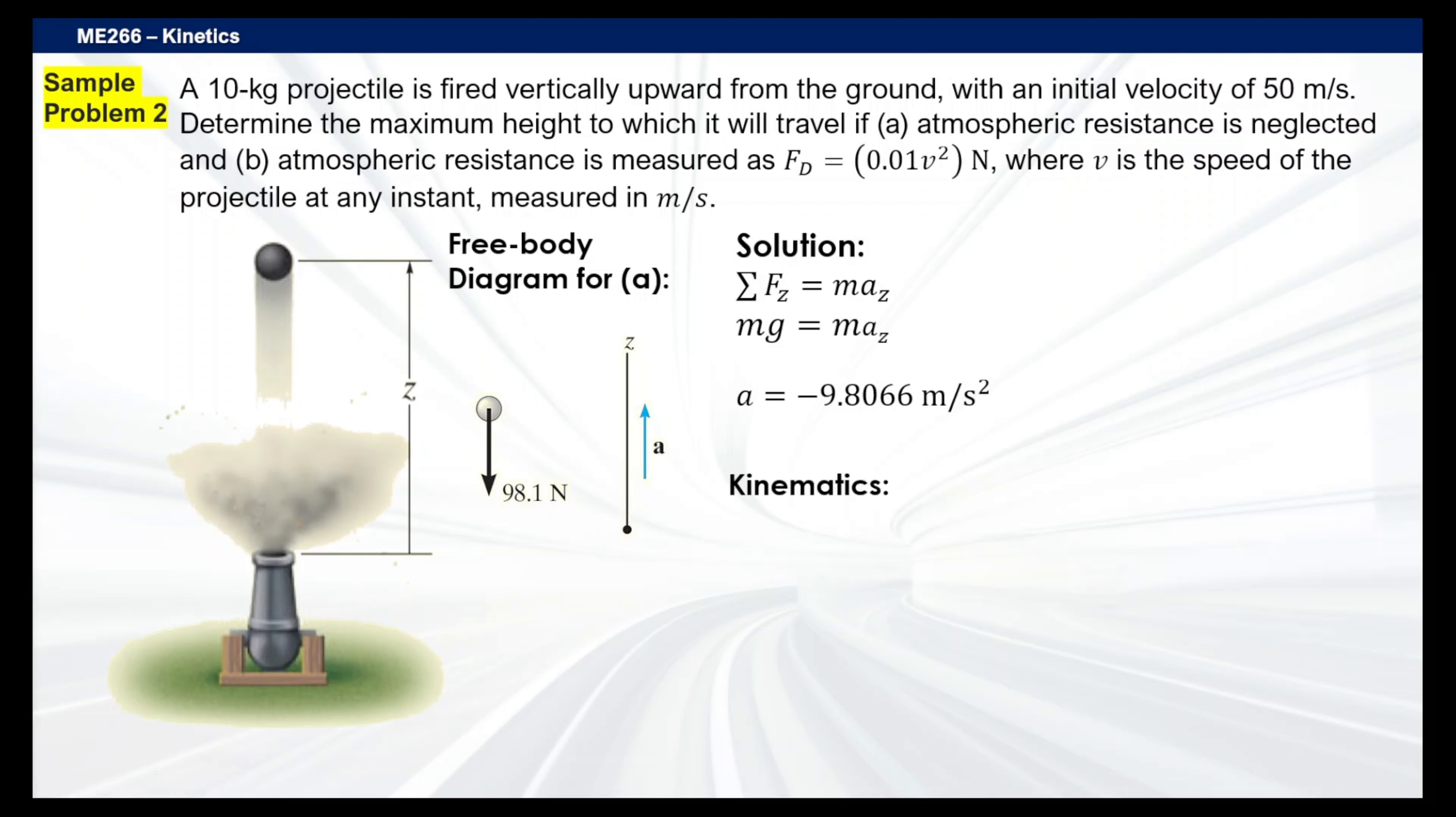So for that, we can set up our equation using this particular formula. Since we don't have time here, what we can use is VF squared equals VI squared plus 2ACZ. Z here will be our maximum height, so we just replace it with Z equals H. We know very well that at maximum height, our final velocity is going to be zero. So we have 50 meters per second here as initial velocity, minus 2 times 9.8066, that gives us a height of 127 meters for scenario A.